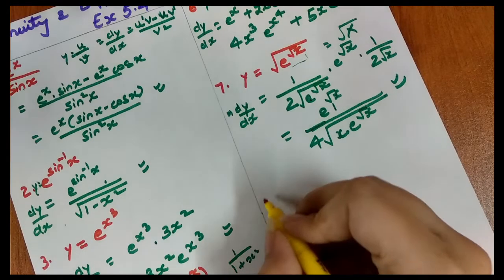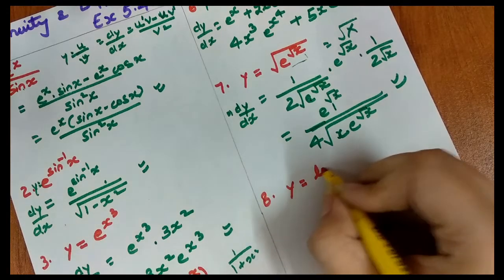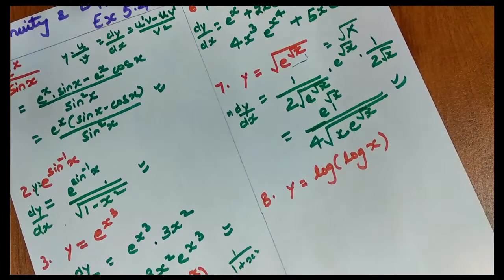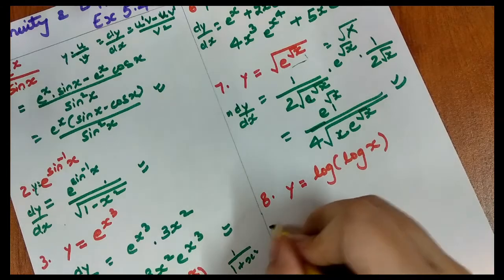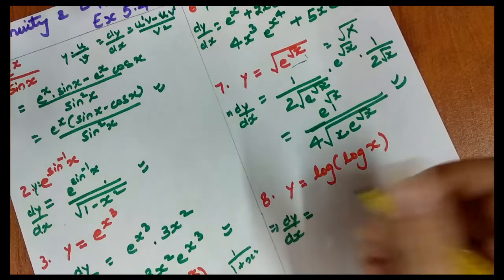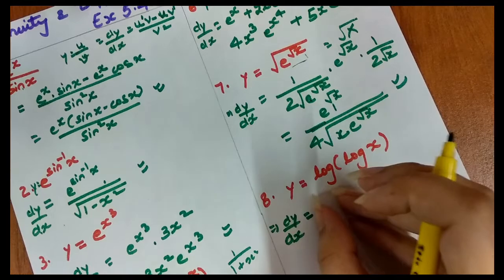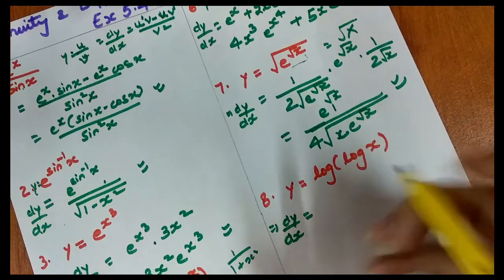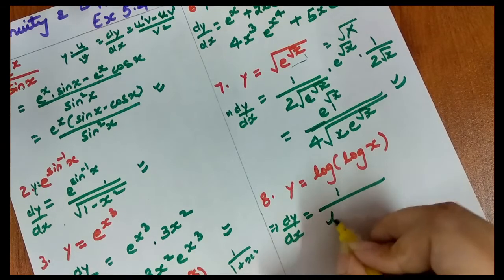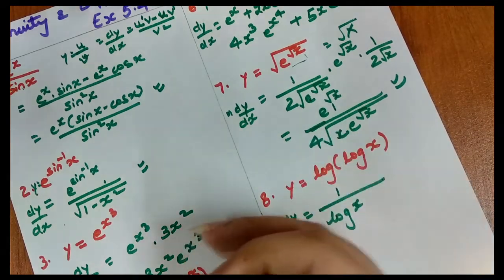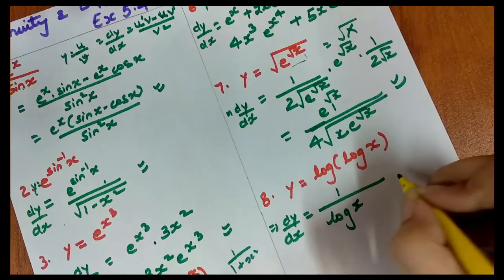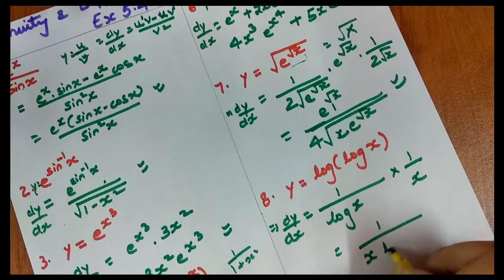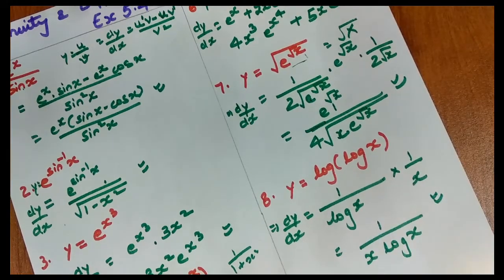Next, y = log(log x). Let's take this differentiation. dy/dx — we differentiate the outer log first, giving 1/log x. Then we differentiate the inner log x, which gives 1/x. So our final answer is 1 upon x·log x. It's quite simple.